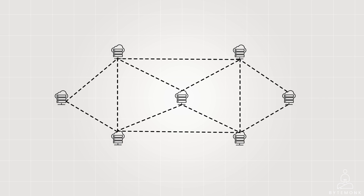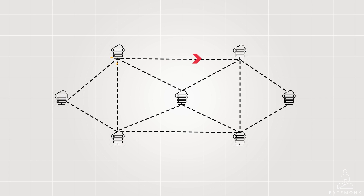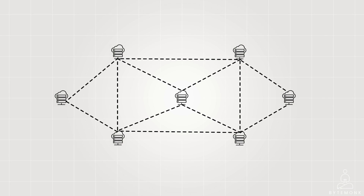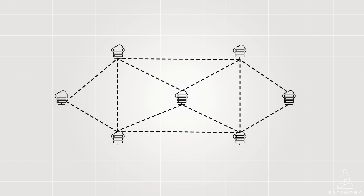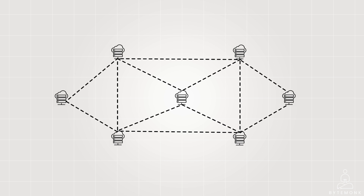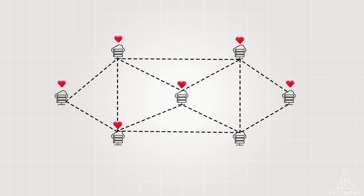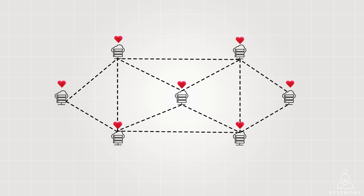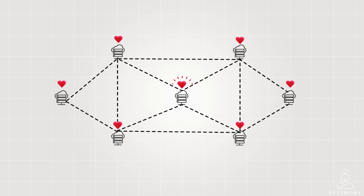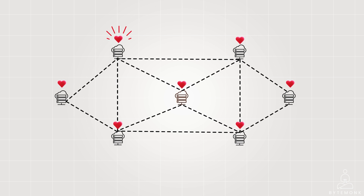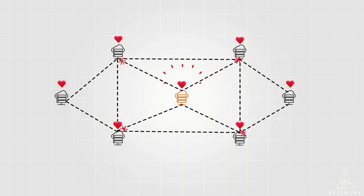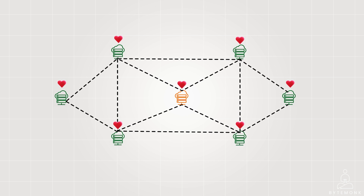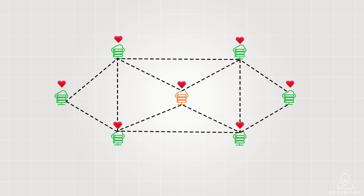In the ever-connected world of computers, information flows between servers like busy bees. Keeping things running smoothly can be tricky. This is where a simple but powerful concept of heartbeat comes in. In the context of distributed systems and networking, a heartbeat typically refers to a signal or message sent at regular intervals to indicate that a node, device or component is functioning correctly and is still alive.